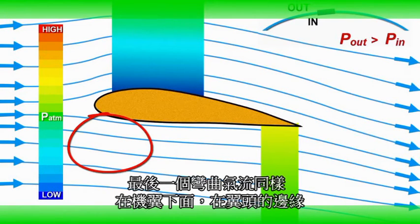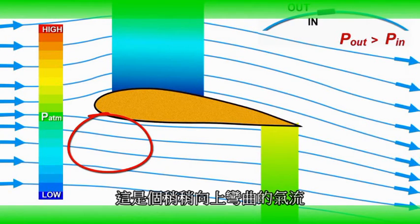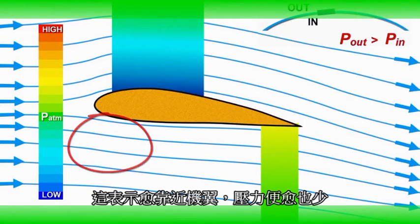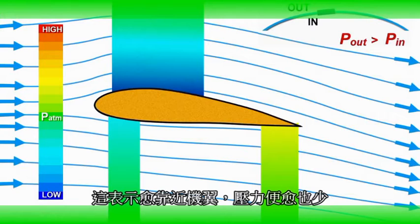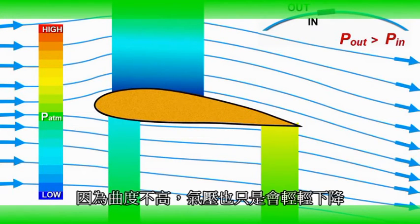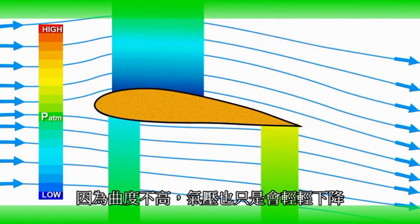The last flow curvature is also at the bottom of the airfoil, close to the leading edge. This is a very small curvature. This curvature, however, is curved slightly upward. This means that the pressure should decrease in this region as we move toward the airfoil. Due to the very small curvature, there will be a very small drop in pressure.